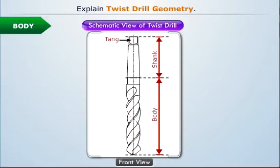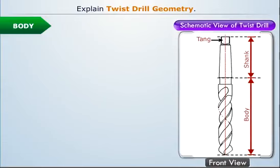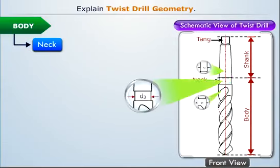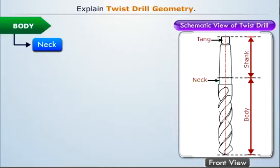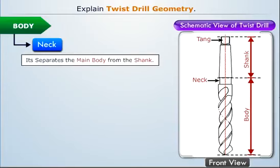Let us see the front view of the drill body and its parts. It consists of a neck at its upper end, whose diameter is smaller than the part of shank present above the neck and the rest of the body. The neck separates the main body from the shank.